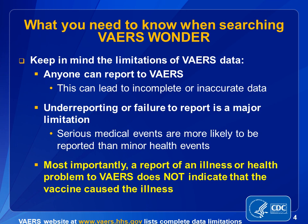It's important to understand the limitations of VAERS data so you have a clear understanding of what the data means. VAERS is a passive reporting system, meaning that reports about adverse events can be submitted voluntarily by anyone, including health care providers, patients, or family members. Because of this, VAERS data may and often does include incorrect and incomplete information. Under-reporting, or failure to report events, is one of the main limitations of VAERS. However, we do know that serious medical events are more likely to be reported than minor ones.